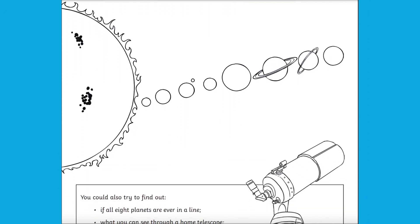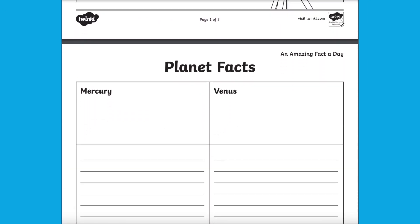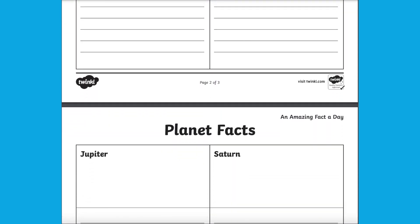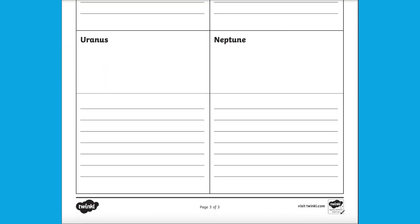A way in which you could further extend this learning could be by asking the children to research other things in our solar system such as our moon, other planets' moons, the international space station, or even the dwarf planets such as Pluto.